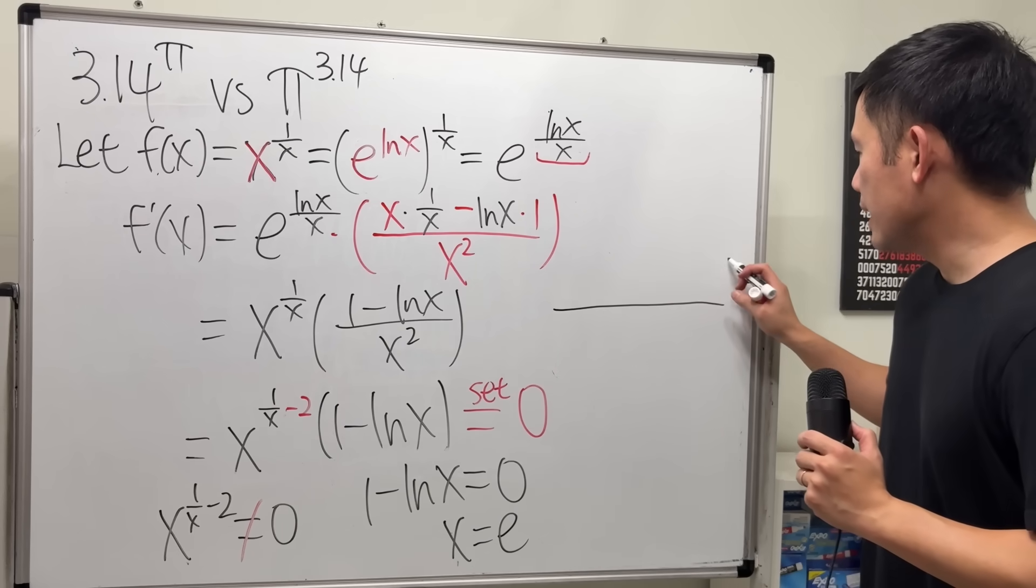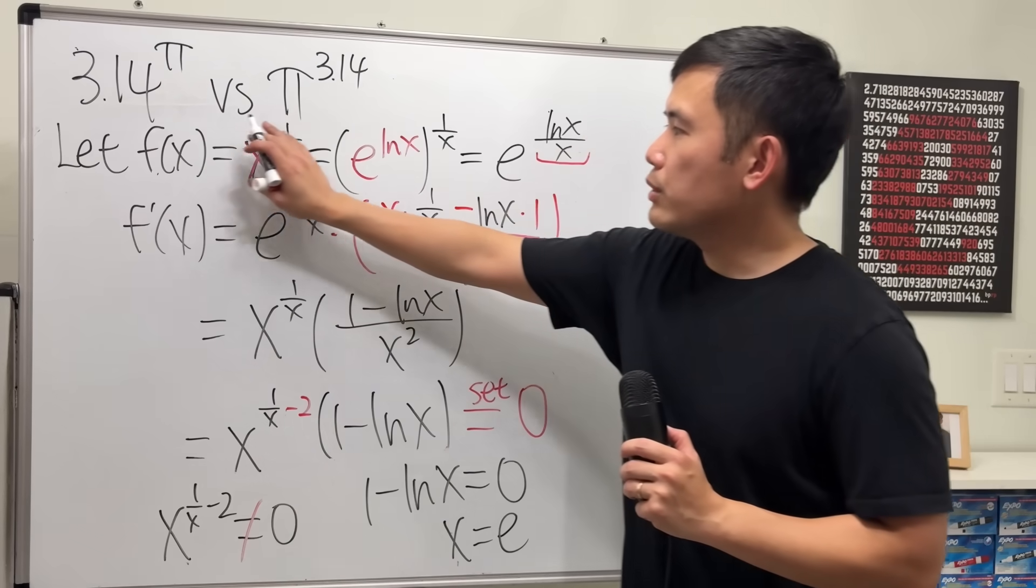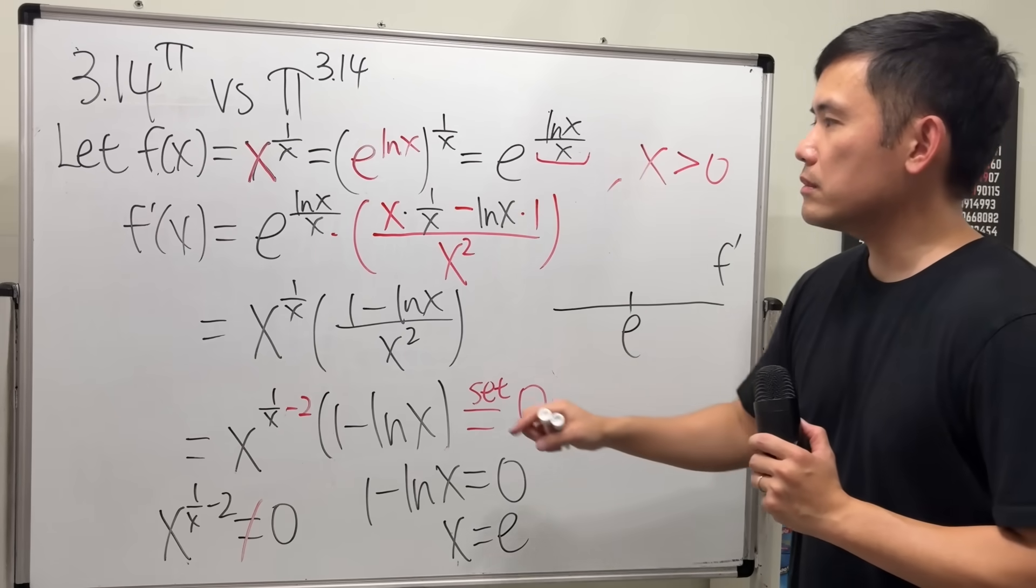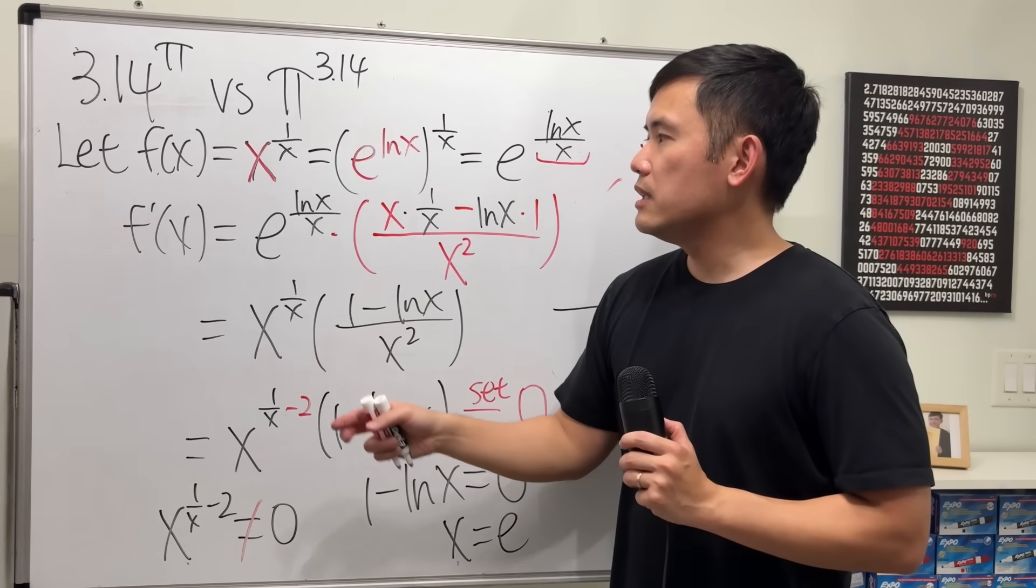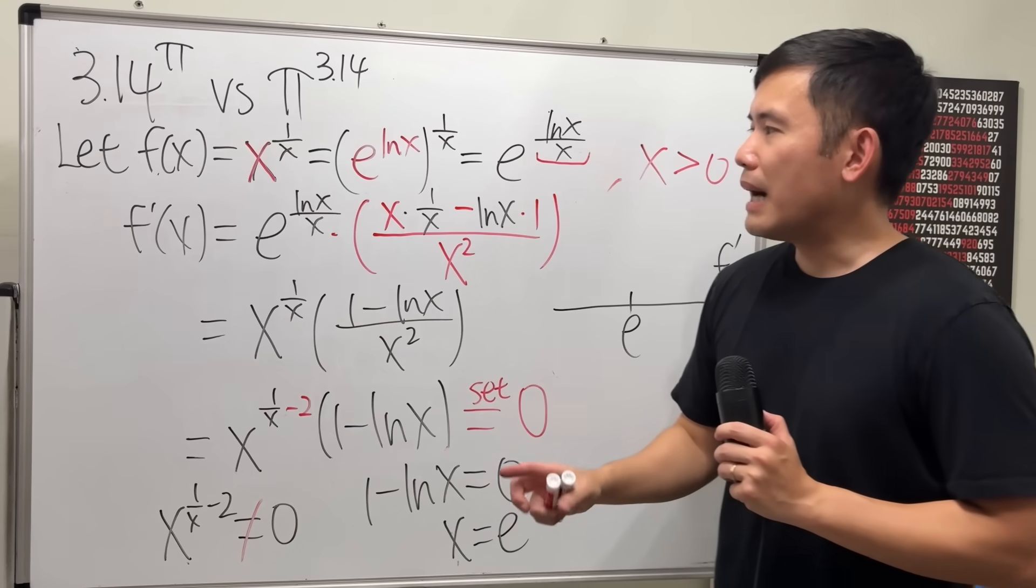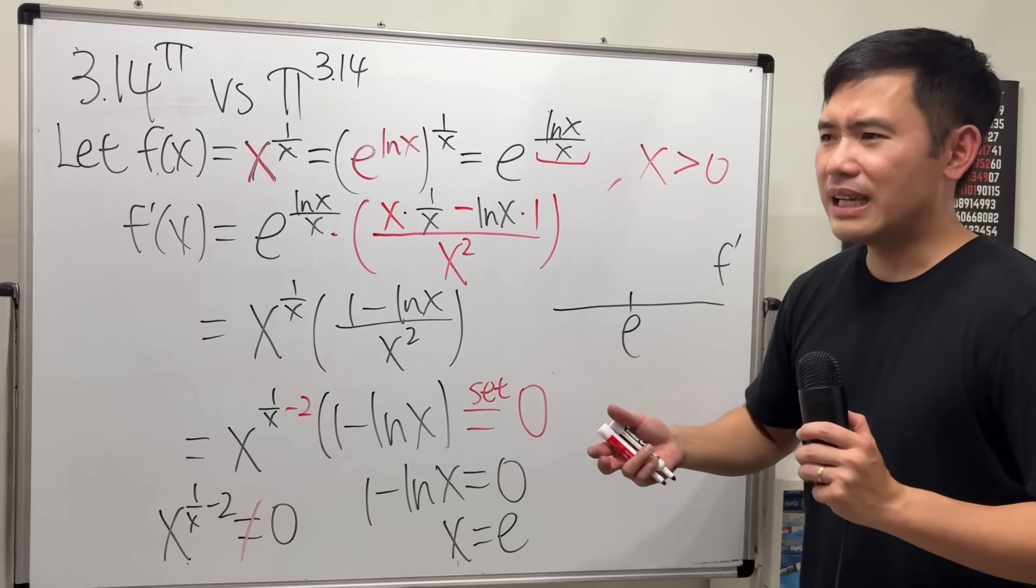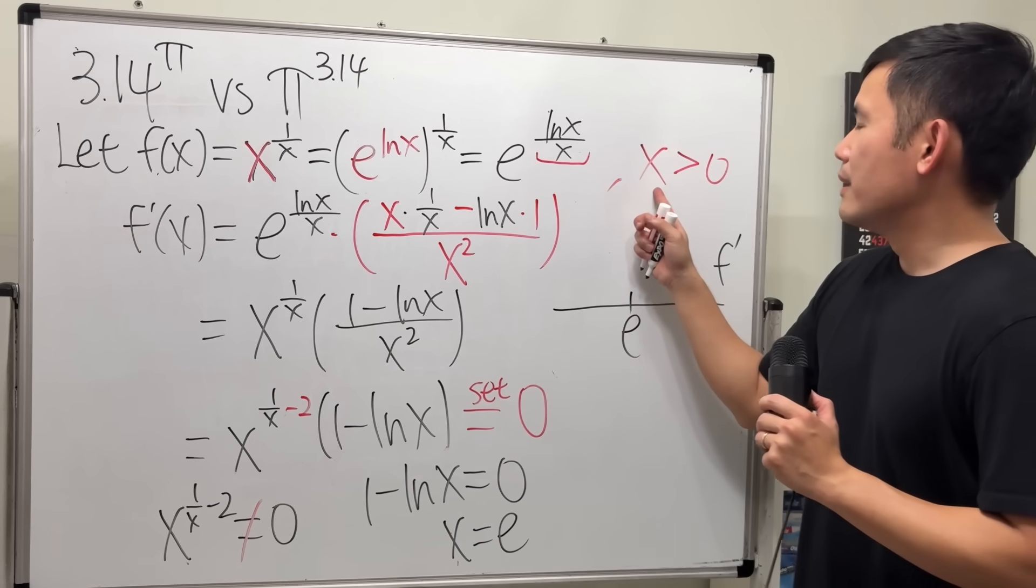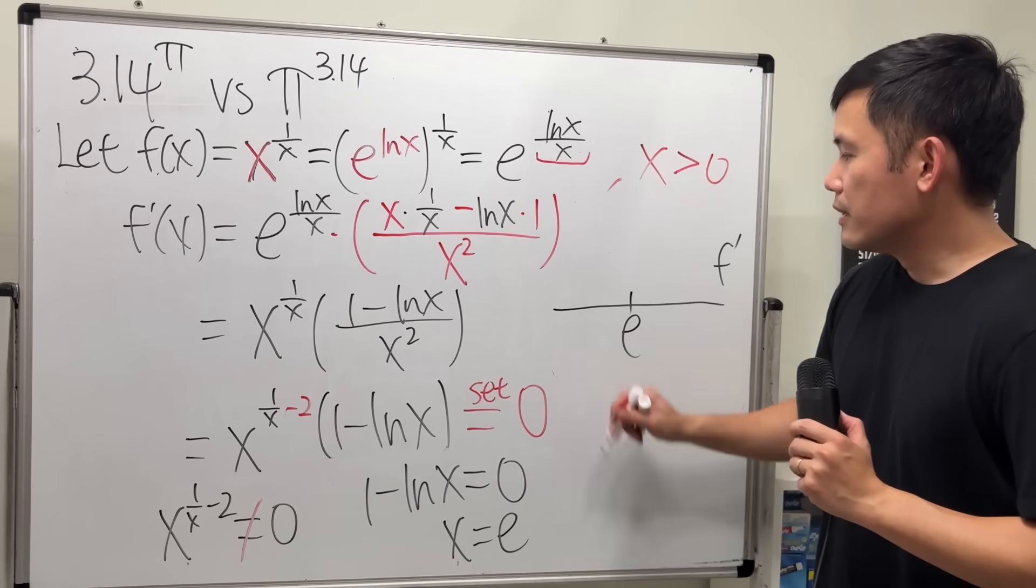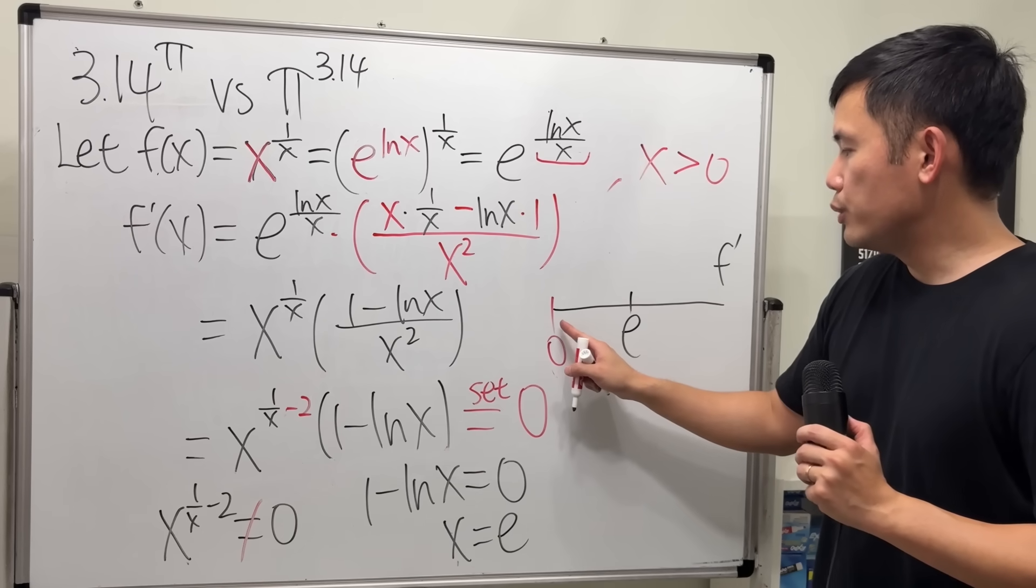And now, we can draw a number line to do the first derivative test. And in fact, if you look back to this function, I'm going to say that we just want to consider when x is greater than 0. First, the x cannot be 0. Secondly, even though x could be negative, such as you can plug in negative 1 into the x here, but if you are to talk about continuity or do calculus, derivative, and all that, you should at least have some continuous part, right? So that's why on the negative side, the function is not continuous. So, let's just consider when x is greater than 0. So, this is like my starting.